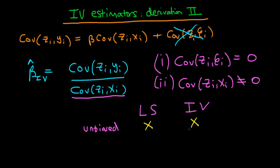The problem is that in finite samples, because we've got a ratio of two random variables — the top and the bottom here — it doesn't necessarily have to satisfy any finite sample distribution, which means that we can't say that the distribution is centered around the true population parameter, beta.